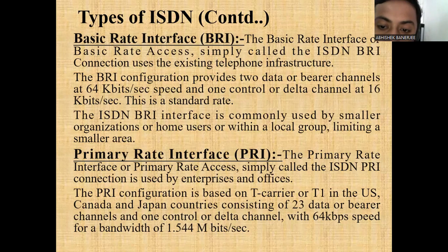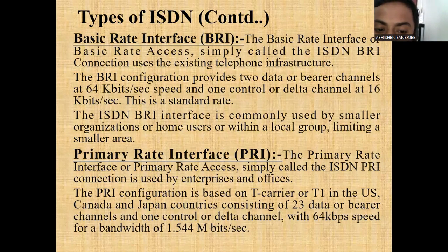The Primary Rate Interface, or Primary Rate Access, simply called ISDN PRI, is used by enterprises and offices. The PRI configuration is based on T-carrier and T1 in the US, Canada, and Japan, consisting of 23 data or B-channels and one control or D-channel.